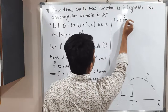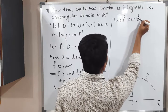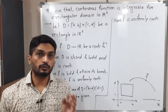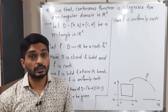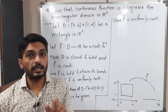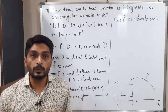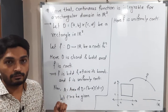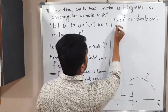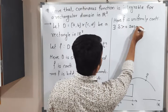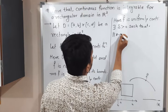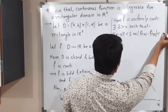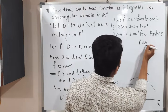Since F is uniformly continuous, using the definition: for given epsilon there exists delta greater than zero such that norm(X − Y) less than delta implies |F(X) − F(Y)| less than epsilon, and this is true for every X, Y in the given domain D.